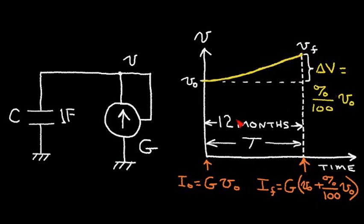And at 12 months later, I have a final voltage V sub F. And this delta V represents the interest that I've earned, for example, in my savings account. And this is equal to the percent divided by 100 times the starting voltage V0.